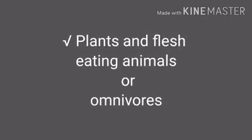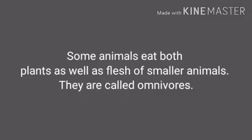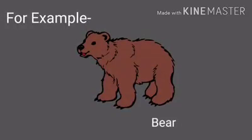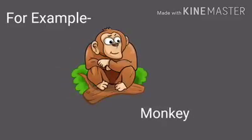Some animals eat both plants as well as the flesh of smaller animals — they are called omnivores. For example: bear, crow, and monkey.